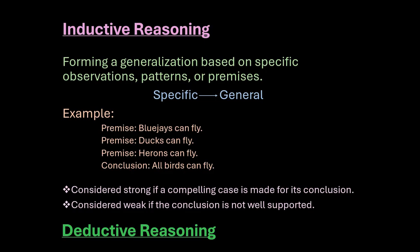With inductive reasoning, our conclusion doesn't necessarily have to be a valid conclusion — it is something that could be incorrect. We know that there are birds that cannot fly, but based on the evidence and the premises that we've set down, it logically follows that all birds can fly.